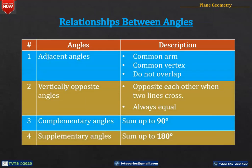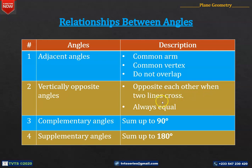To recap, we have learnt that adjacent angles share a common arm and a common vertex and do not overlap. Vertically opposite angles are two angles that are opposite to each other when two straight lines cross, and these angles are always equal. Complementary angles sum up to 90 degrees, and supplementary angles sum up to 180 degrees.